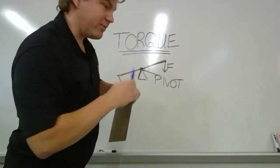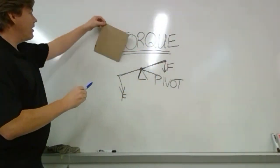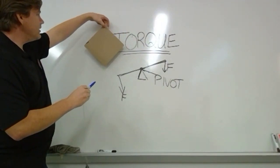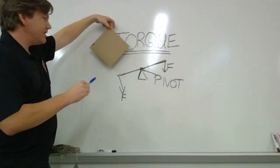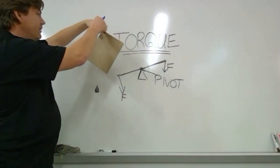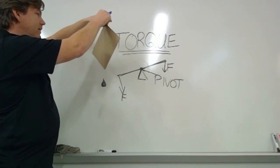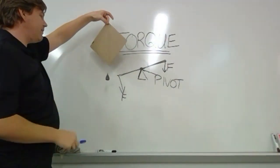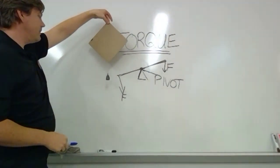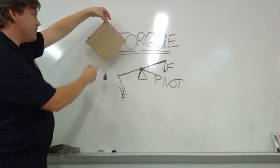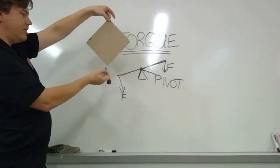You might also want a sharpie for this. All you do is hold the object loosely so that it achieves this state of equilibrium. Then you hold this plumb line at that point until it also reaches equilibrium. And what you'll see is that it forms a line on the piece of cardboard.